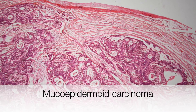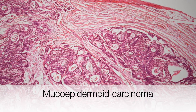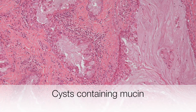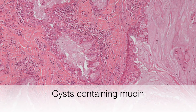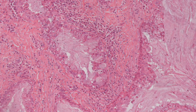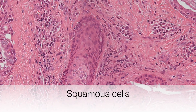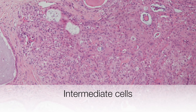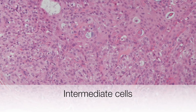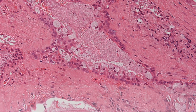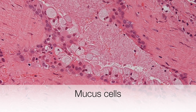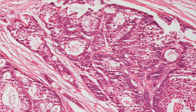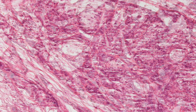Here is a low power view of a mucoepidermoid carcinoma and you can see there are some solidish areas and some cystic areas. Here we can see cysts containing mucin. Here is an island of squamous cells, and these are intermediate cells. And here we are zooming in to some mucous cells. To finish with, here are some more images of the histology from some mucoepidermoid carcinomas.